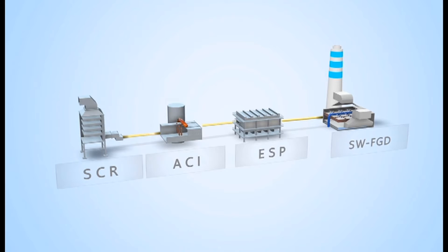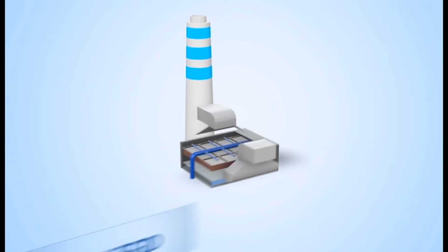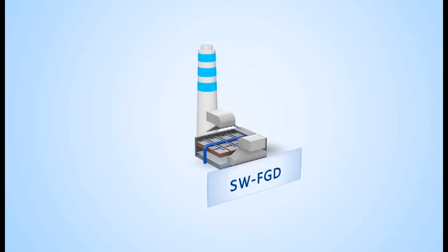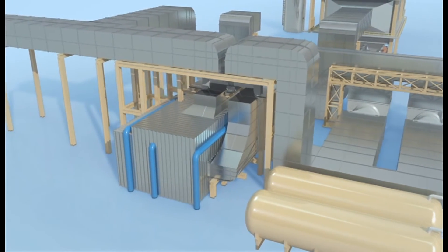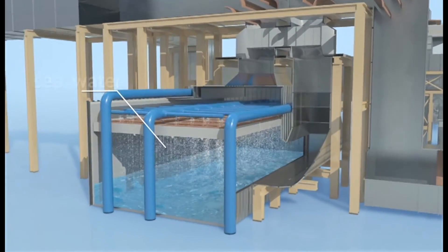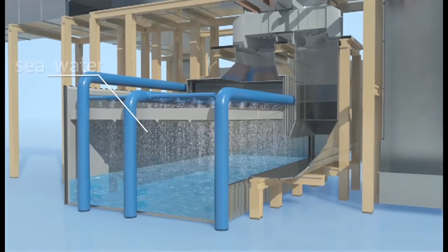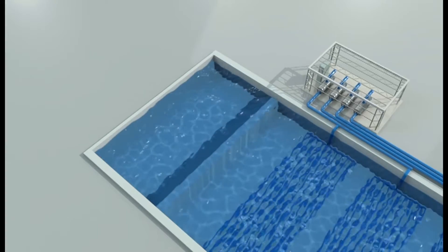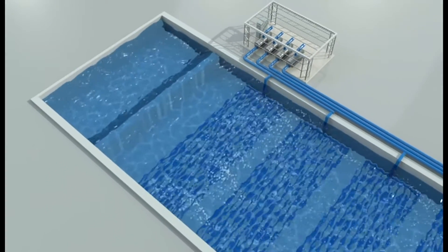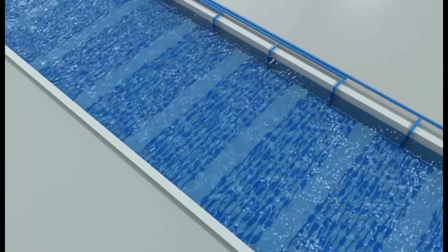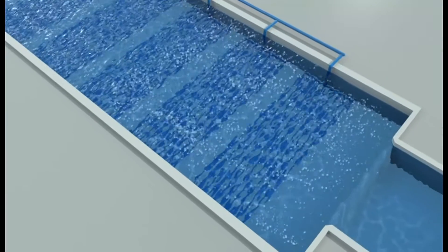Now we move on to sea water flue gas desulfurization, or sea water FGD. The process sprays the sea water, which is alkaline, to react with sulfur dioxide, which is acidic. The sea water will adjust the acidity to neutral. Then, it will flow to the aerated lagoon to add oxygen back. After this process, sulfur dioxide turns into sulfate, which is an element of natural sea water.